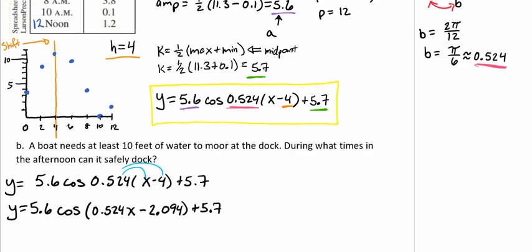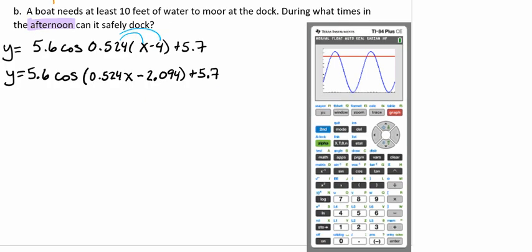We see that we have a couple different intersection points where that happens. If we go back to our question, it's asking us very specifically for the times in the afternoon where this can occur. So looking at our graph, we see that occurs here and here. We're going to use the intersect feature of our calculator to find those values.